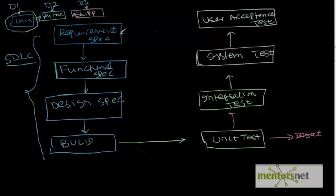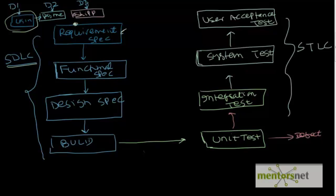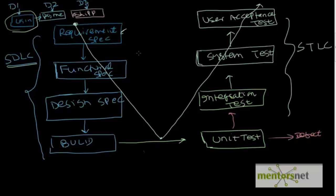What I showed you on the left-hand side is the software development life cycle, and on the right side is the software testing life cycle. The software development life cycle is a top-to-bottom approach, whereas the software testing life cycle is a bottom-to-top approach — it starts from the developer and goes all the way to the customer. Together they form a V shape, which is why this is called the V model of development.